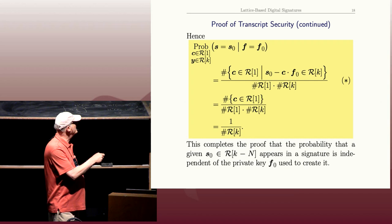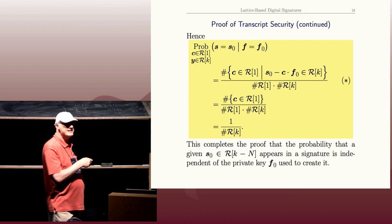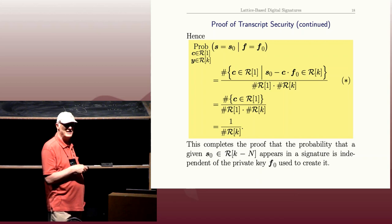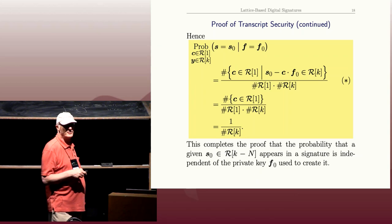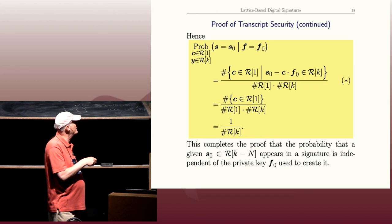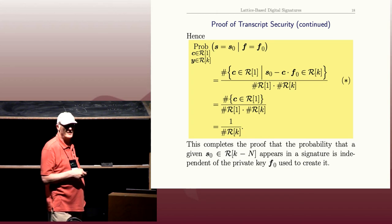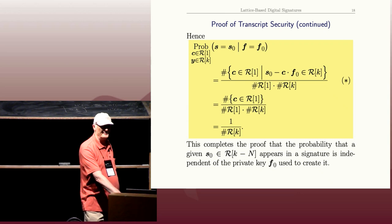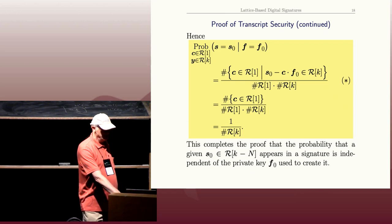So the probability of getting signature S naught, if your private key is F naught, doesn't depend on your private key. It actually doesn't depend on the S naught either. Each S naught has an equal probability of appearing, the way we've set it up.